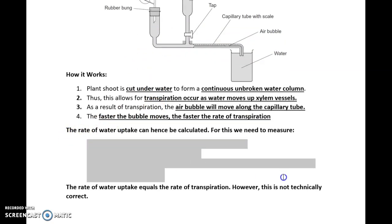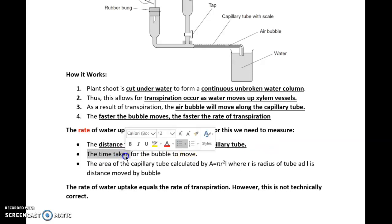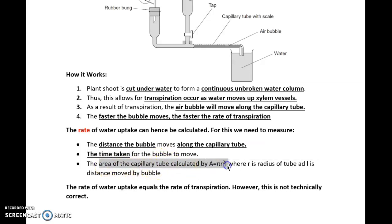The key things we need are the distance the bubble moves along the capillary tube. We need the time taken, obviously, because it's rate for the bubble to move, and the area of the capillary tube, which can be deduced by area equals pi r squared L. R stands for radius of the capillary tube here, and the L is the distance moved by the bubble. So A equals pi r squared L is a very important formula for you to remember.